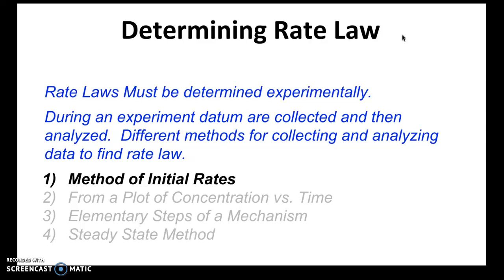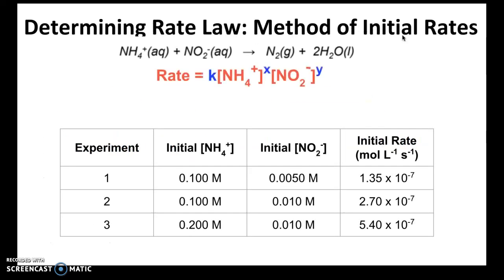The next thing we looked at was determining rate laws. The first method is the method of initial rates. Here's an example of a rate law for the reaction of ammonium and nitrate: the rate law equals the rate constant k times the reactants raised to their rate orders. It's important to note that these rate orders — x and y in this case — are not the same as the coefficients in the balanced equation.